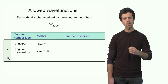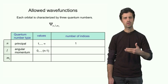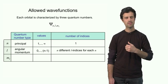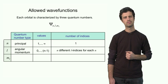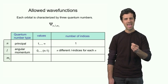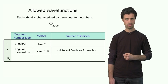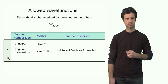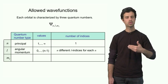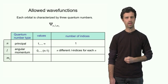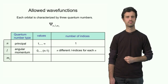This also means that there are a number of allowed values for l for each given n. In fact, n is the number of allowed values of l. When n equals 2, you find 2 allowed values for l: 0 and 1.